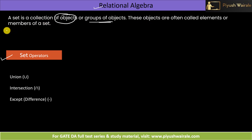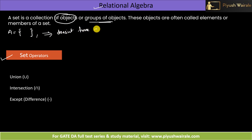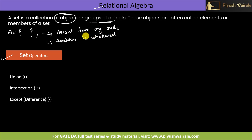For example, I am representing set A. A set is represented inside curly braces like this. It does not have any order, and repetition is not allowed. These are the two important points regarding a set — it is just a collection of elements present inside the curly braces.